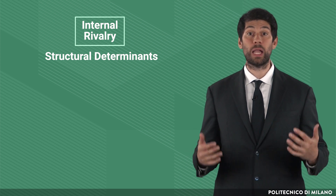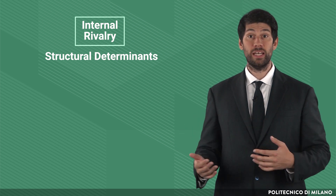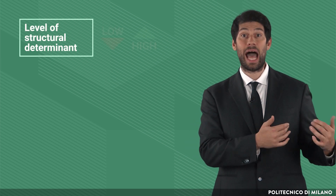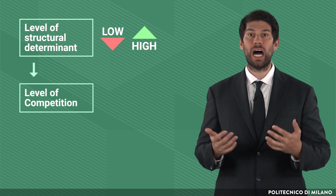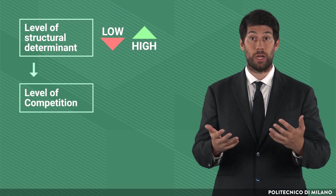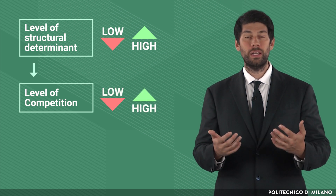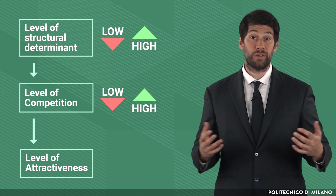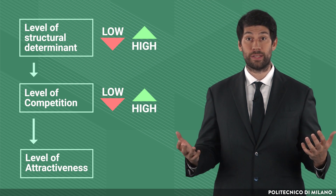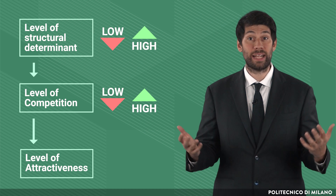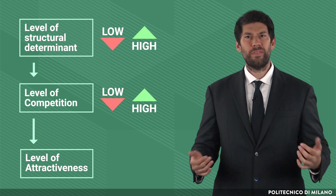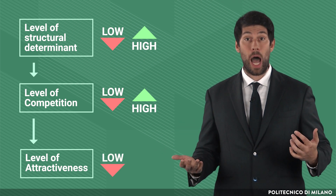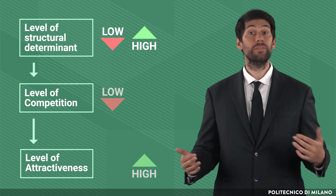For each determinant, I will build a cause-effect chain that will consider, in turn, the level of the structural determinant, the level of competition caused by the structural determinant, and the level of attractiveness influenced by the level of competition. A basic assumption for industry analysis is that competition and market attractiveness are inversely proportional, so this cause-effect relationship will always be inverse — attractiveness drops as competition rises, and the other way around.